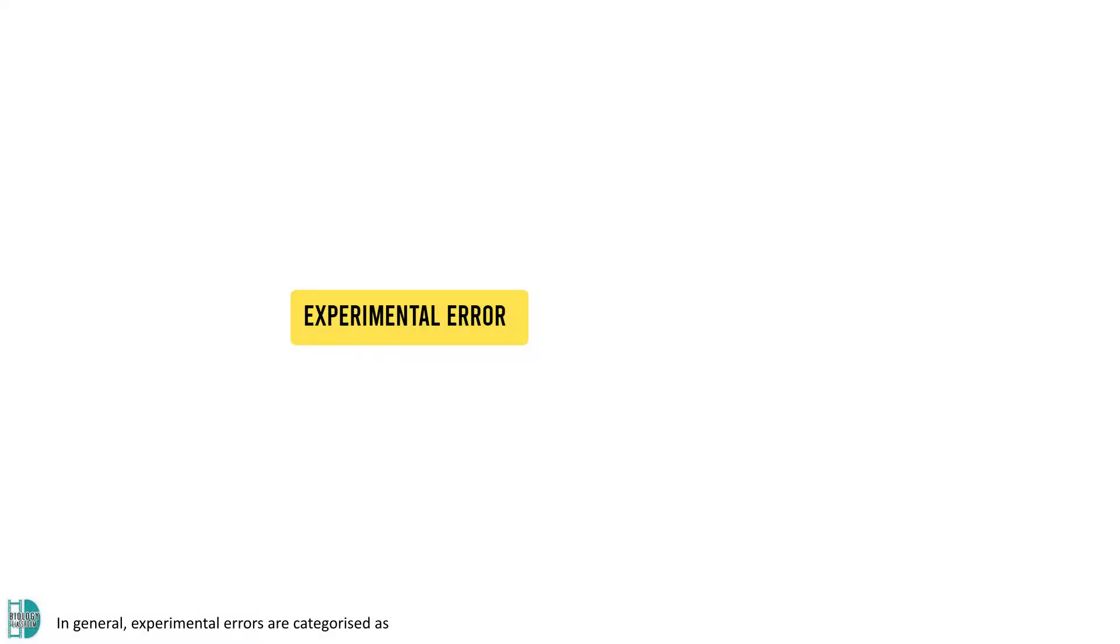In today's video, let's talk about systematic error and random error. In general, experimental errors are categorized as systematic and random errors.